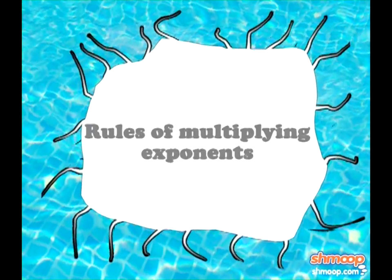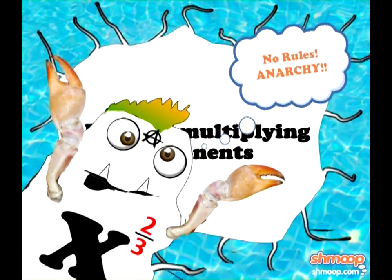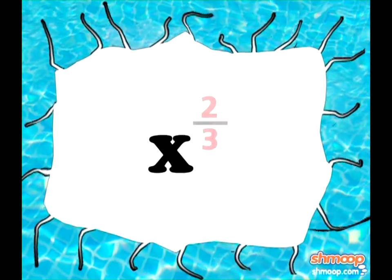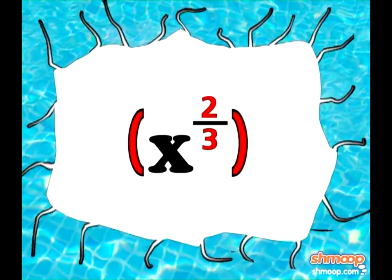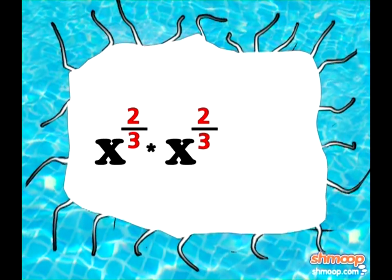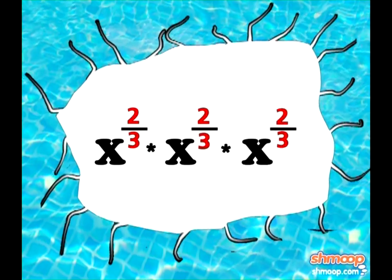Well according to the rules of multiplying exponents, let's say we raise x to the 2 thirds power by 3. That means we multiply x to the power of 2 thirds by itself three times.